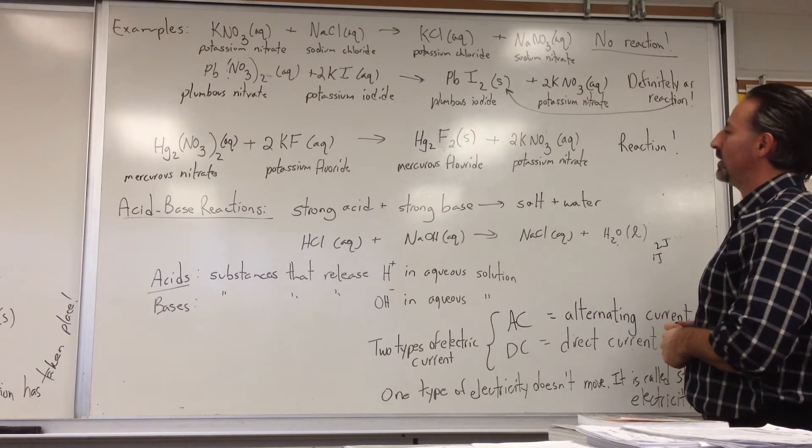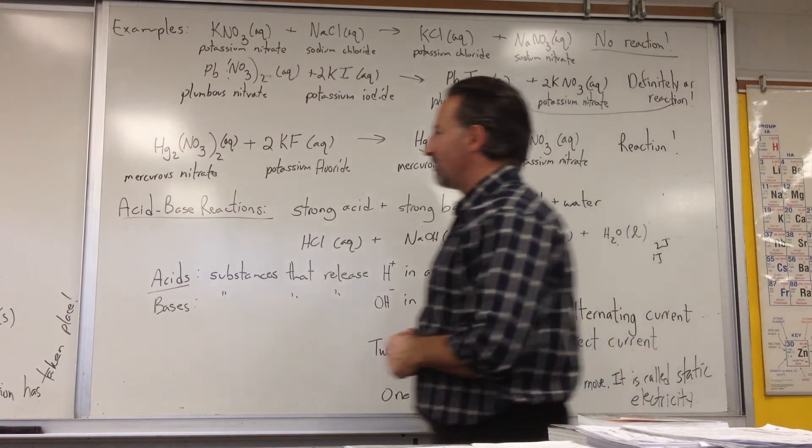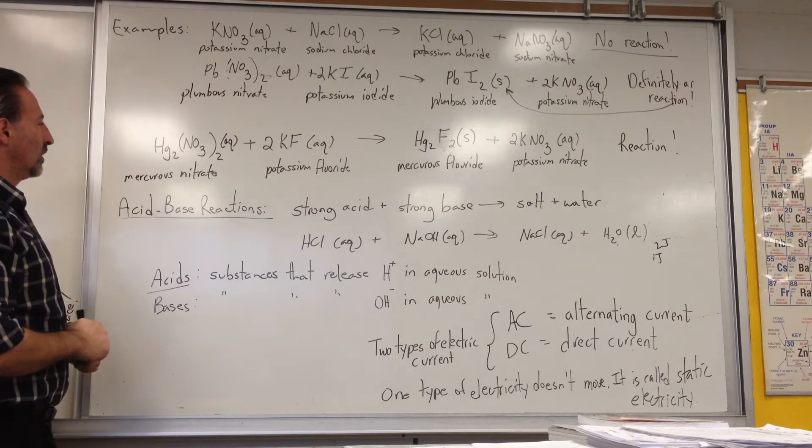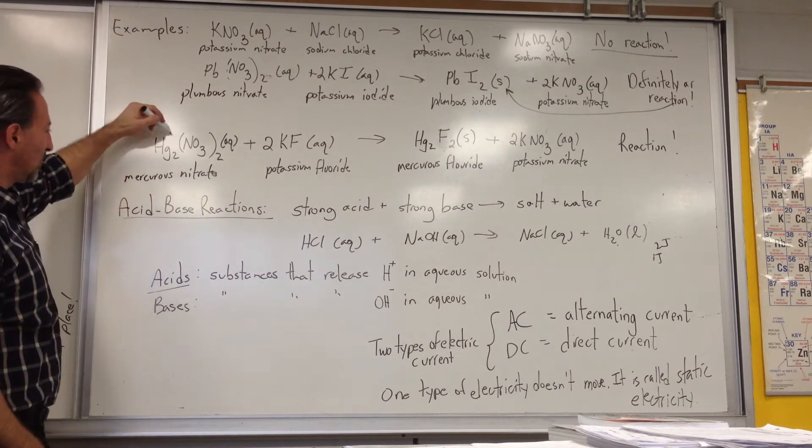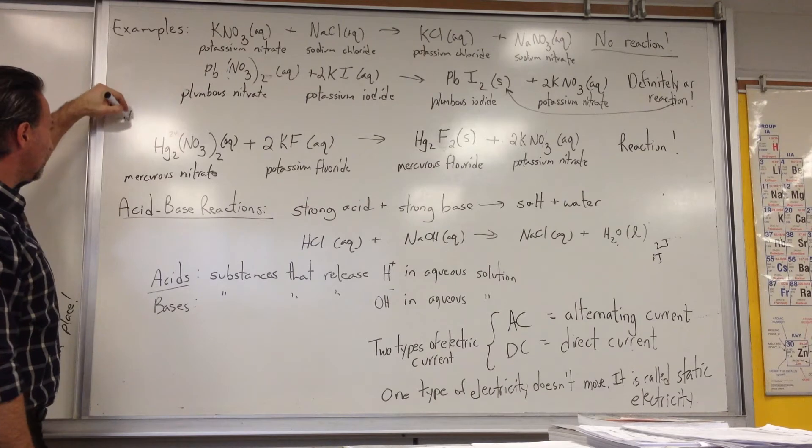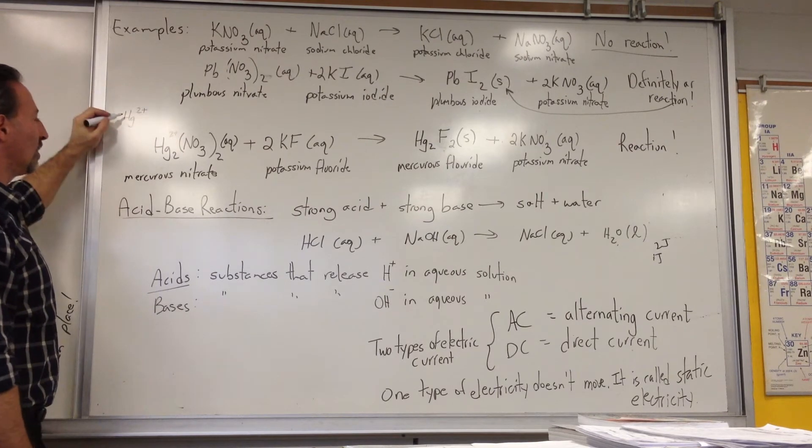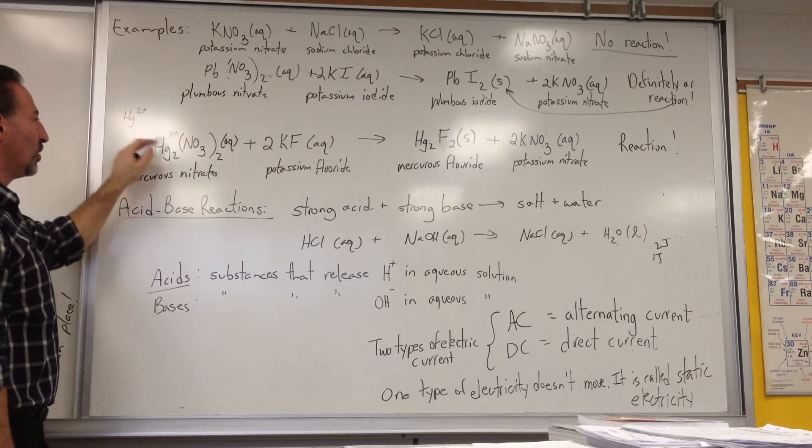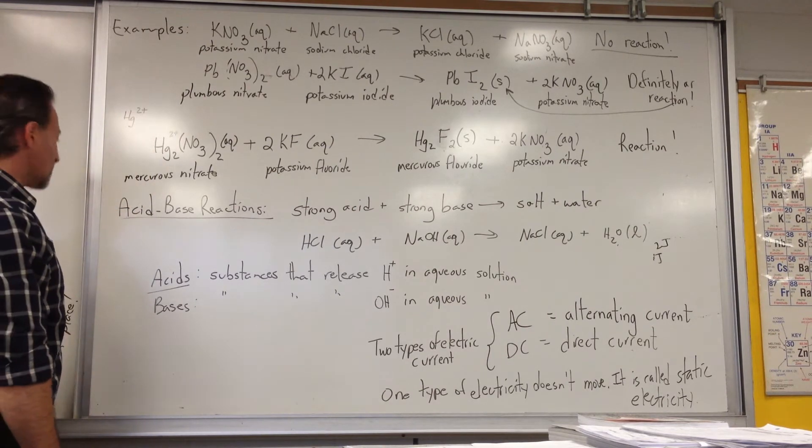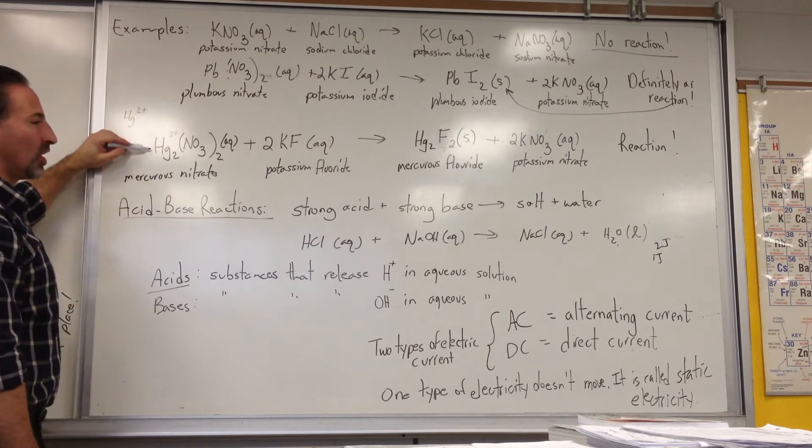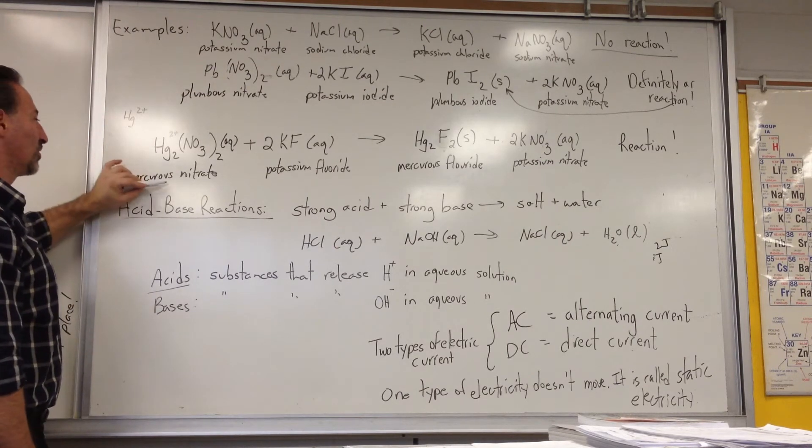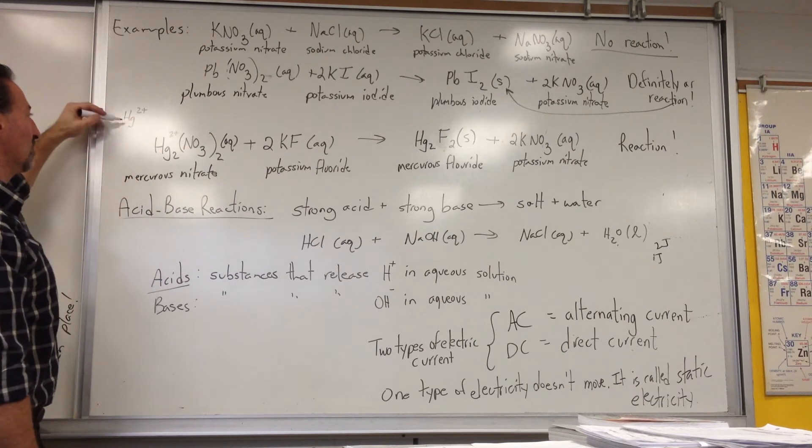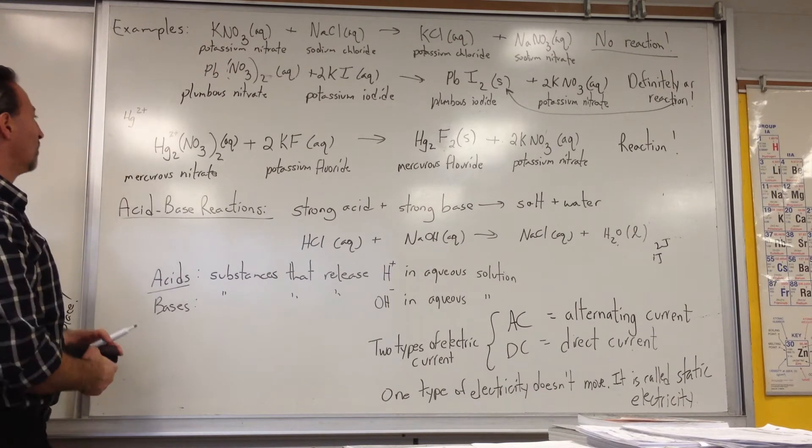Here's another example. We have mercuris nitrate. And it's mercuris because the charge on this is plus two. Mercuric nitrate would be a plus two charge on one mercury atom. Whereas mercuris nitrate would be a plus two charge on two mercury atoms stuck together. So this has the lower charge per mercury atom. That's why it's given the mercuris designation. So it would be like mercury one then. You could say this would be mercury two, using the modern way of naming.